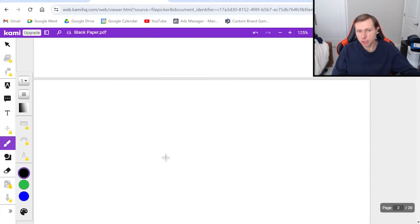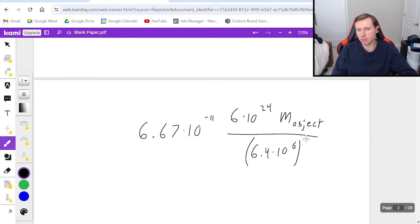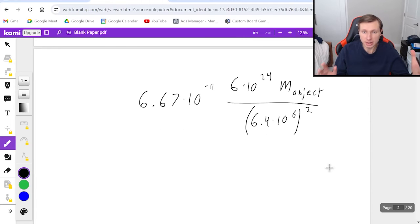And now if I plug these variables into my equation, I get big G, which is 6.67 times 10 to the minus 11th, times mass one, mass of the earth, 6 times 10 to the 24th power, times the second mass, mass of my object, whatever that is, and then divide it by the distance between them, which we're saying is the radius of the earth, 6.4 times 10 to the sixth. Put that in parentheses, and then we're going to square it.